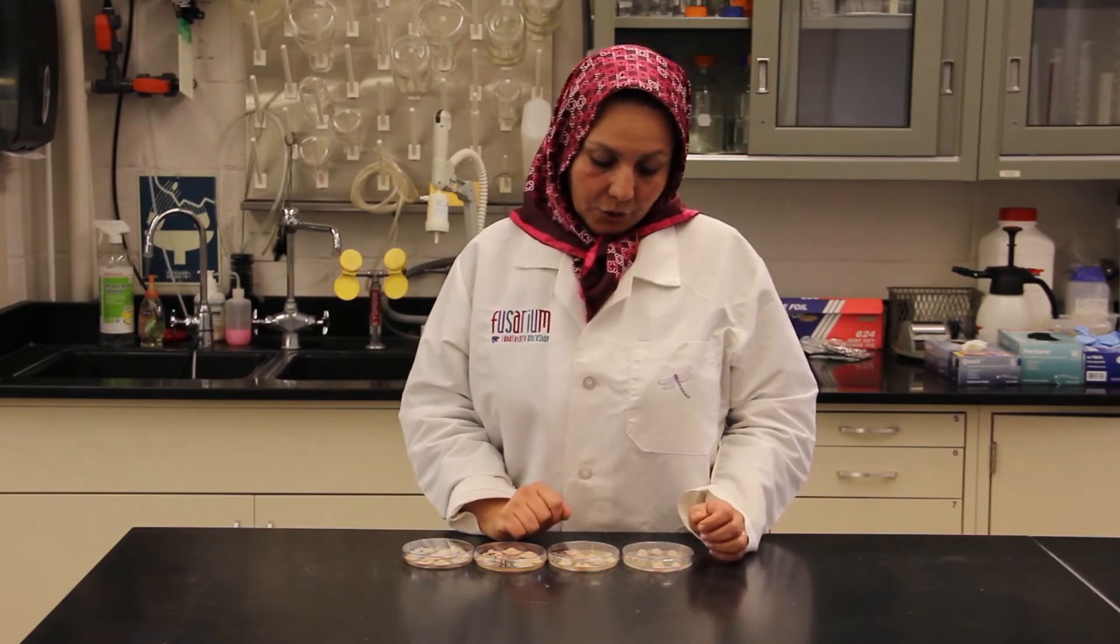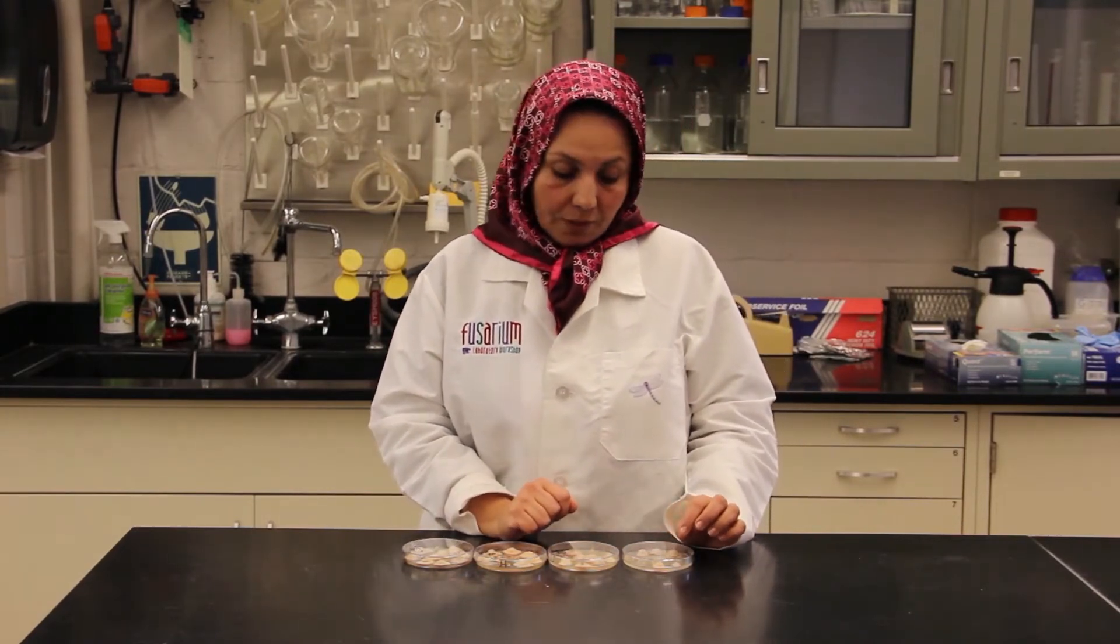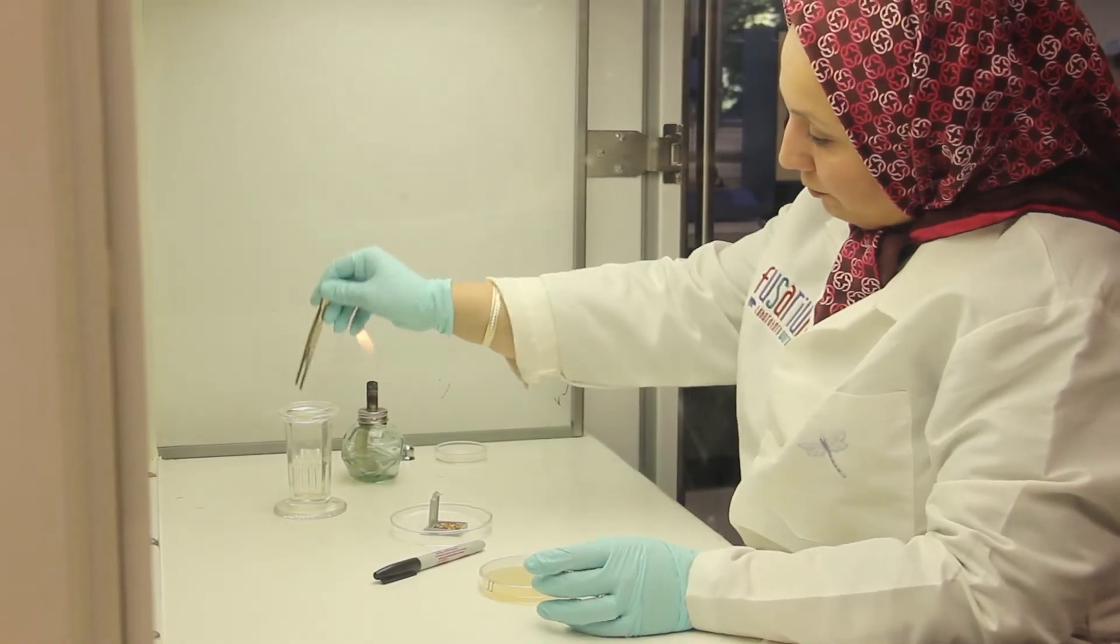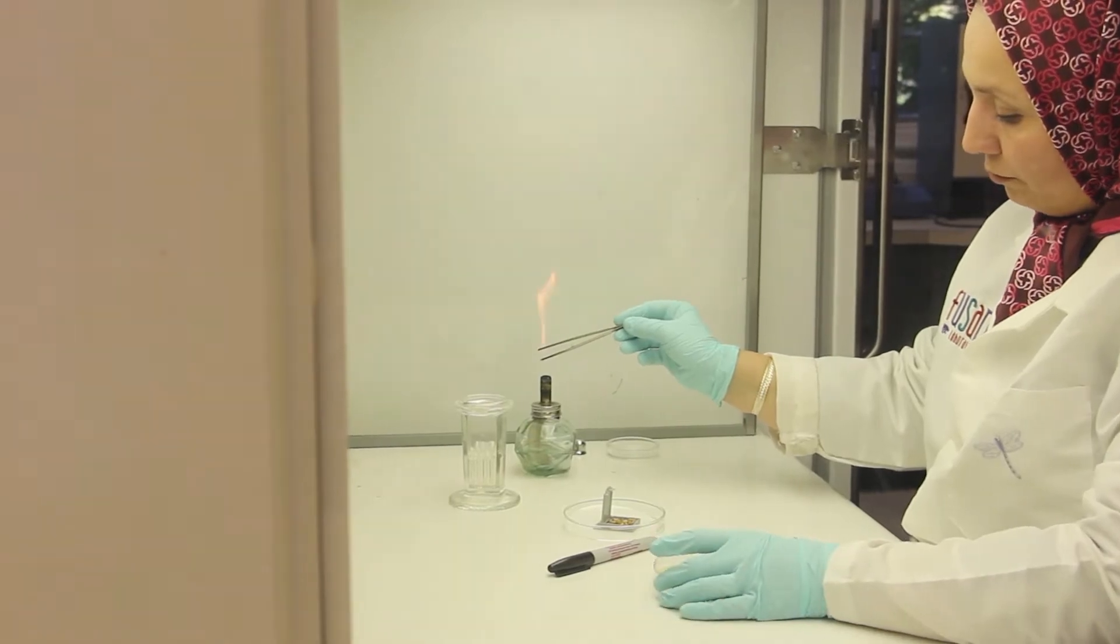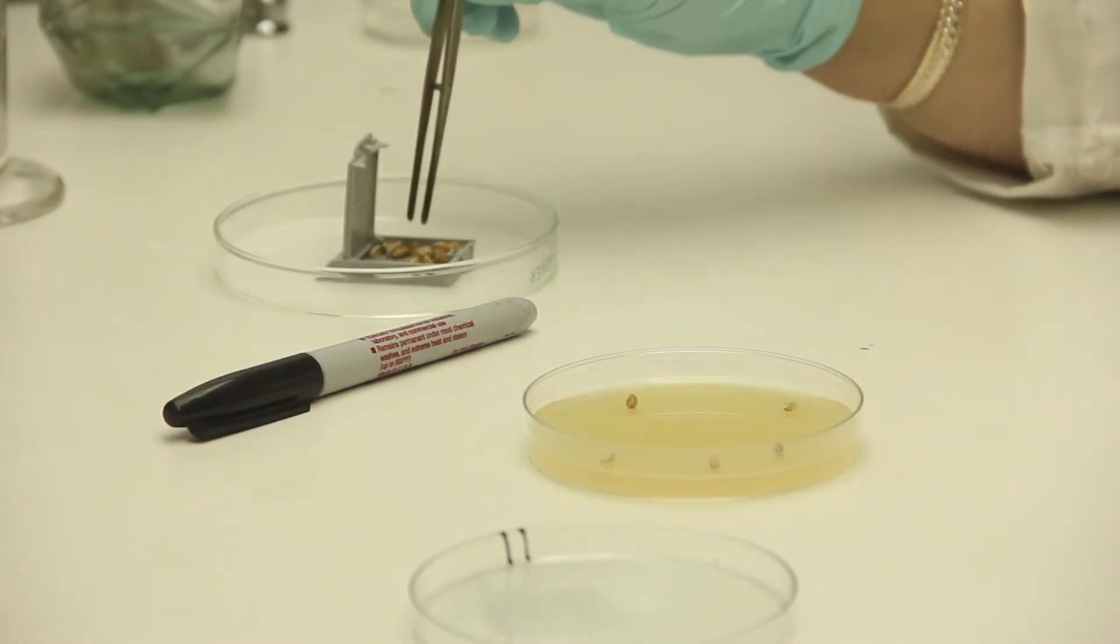After the seeds have been dried in the hood, we plate them on Komada. Make sure you sterilize the tweezers by flaming and take the seeds and put them in the Komada plate.